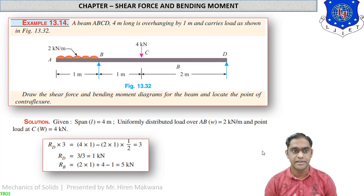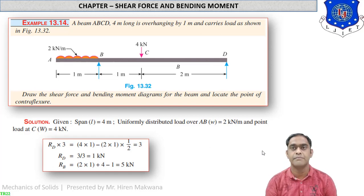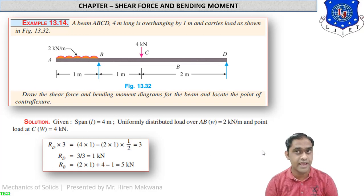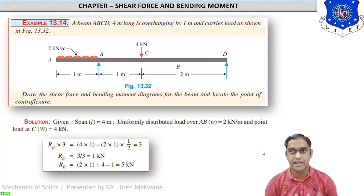The difference between cantilever and simply supported beams is: in the cantilever beam, intersection never occurs in the SF or BM diagram in 95% of cases. In the simply supported beam, intersection occurs only in the SF diagram, not in the BM diagram, and whenever intersection occurs, bending moment should be maximum in the BM diagram at that point.